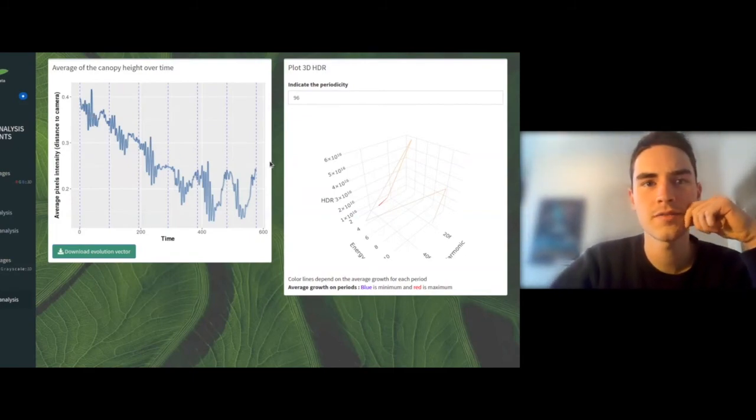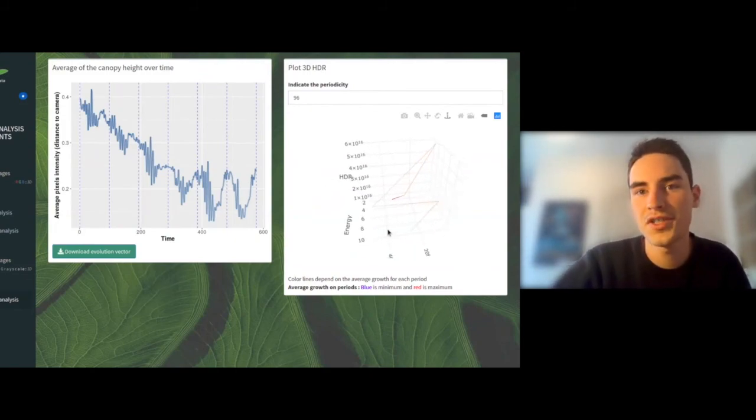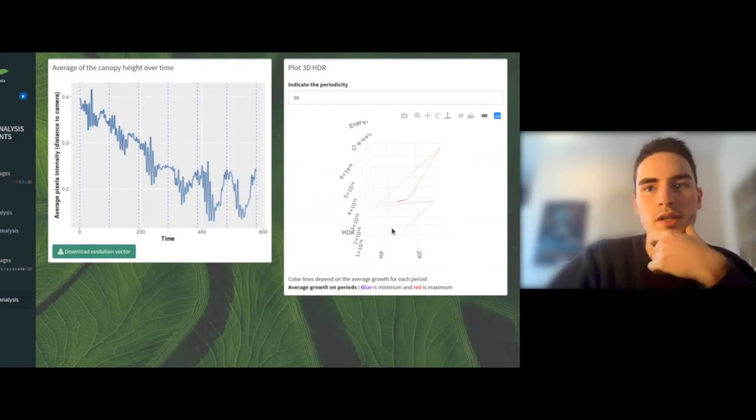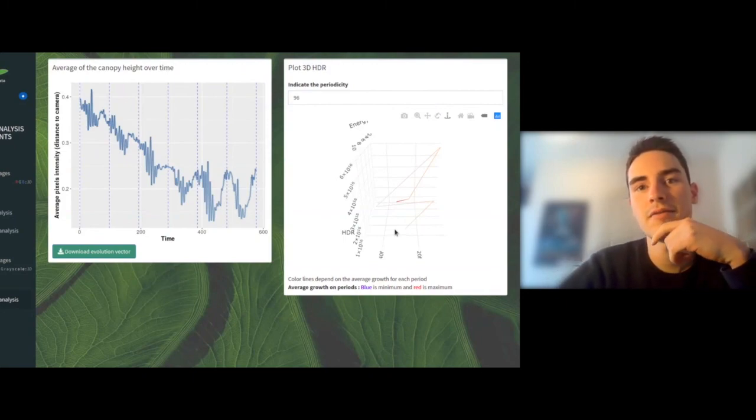And on the right of the screen, we have a 3D plot with the representation of four features for each period. We have the energy of the cyano, the first harmonic, the harmonic distortion rate, and the average growth.